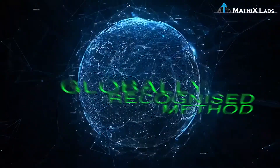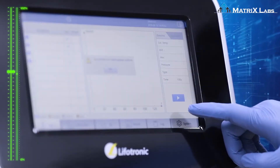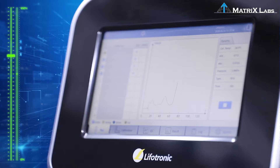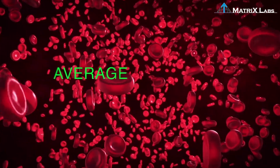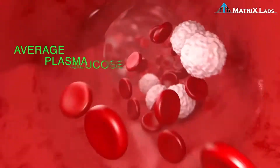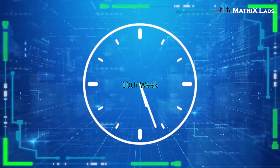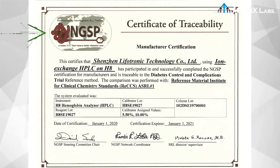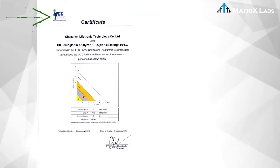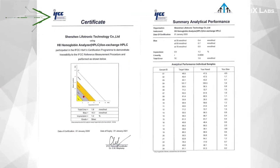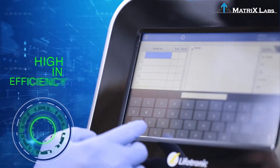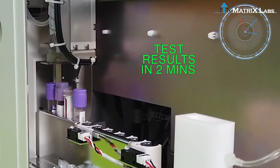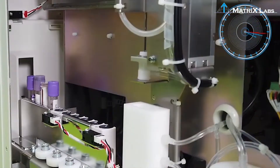HbA1c is a widely recognized parameter to monitor diabetes, which can indicate the average plasma glucose concentration over 8 to 12 weeks. The H8 is certified by NGSP and IFCC for HbA1c analysis.